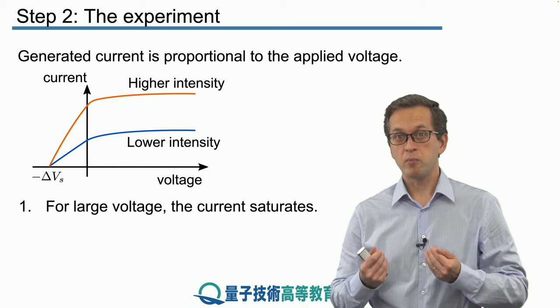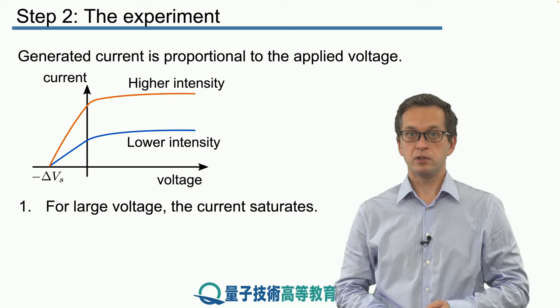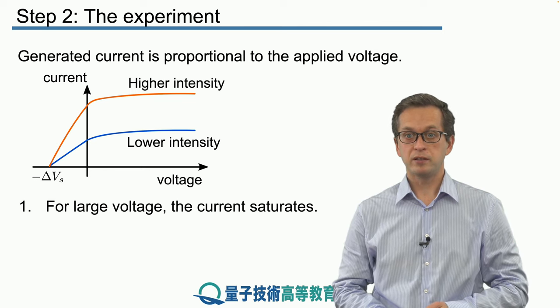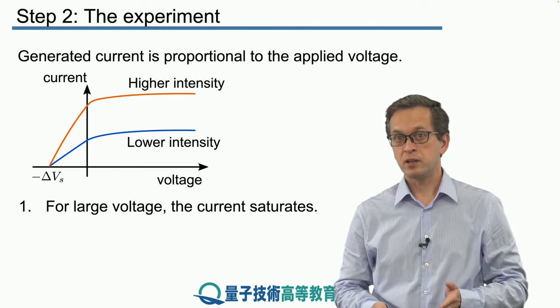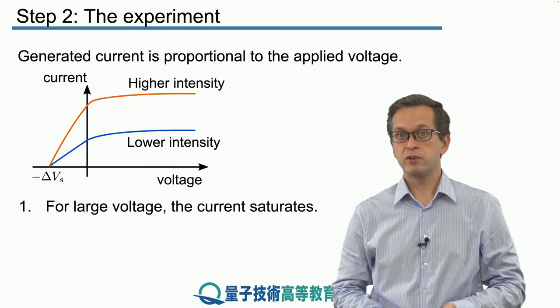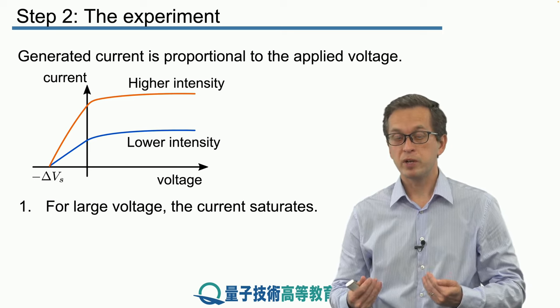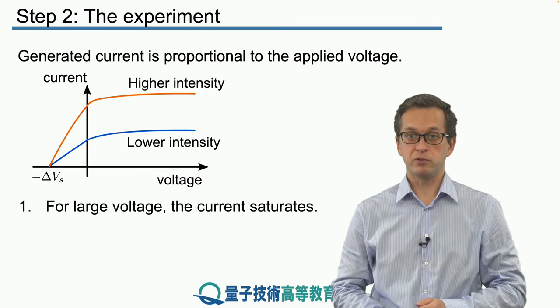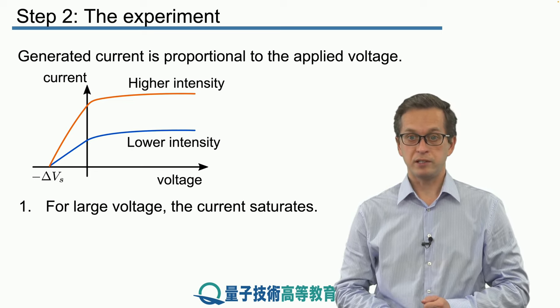Increasing this voltage will make more of these electrons accelerate towards the collector plate. But after some magnitude of the voltage, it will not make a difference whether we increase it further or not, because we will be collecting all of the produced photoelectrons, meaning the current will saturate.